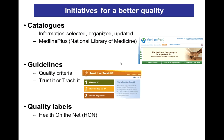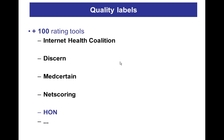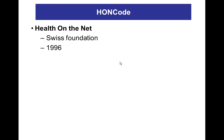The third initiative concerns quality labels, the most well-known being HONcode. A scientific publication from the British Medical Journal in 2002 identified about 100 rating tools developed by public, private, or non-profit organizations used to assess the quality of health websites. Many of them are no longer functional but continue to be displayed on medical websites.